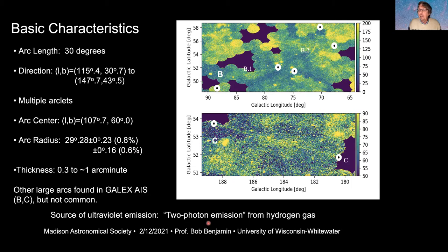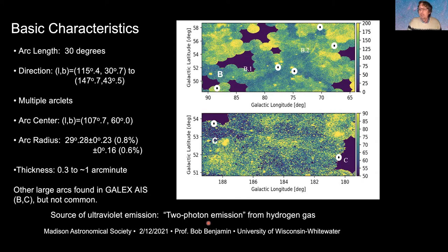The source of the ultraviolet emission turns out to be what's called two-photon emission from hydrogen gas. When electrons recombine with hydrogen atoms and jump between energy levels, they reach the second energy level and want to fall to the first. That transition is forbidden for a single photon because of angular momentum constraints, so nature has found a way for the electron to go from level two to level one by emitting two photons of ultraviolet light. That's what we're seeing in the sky.